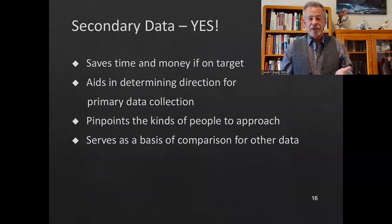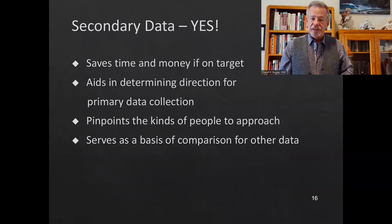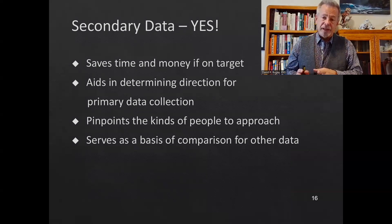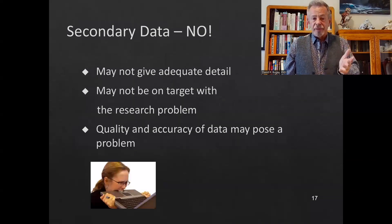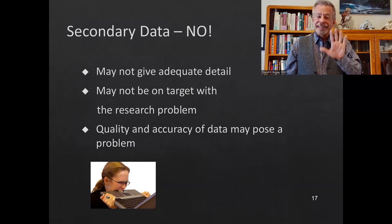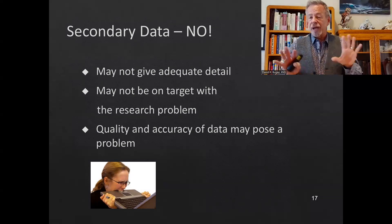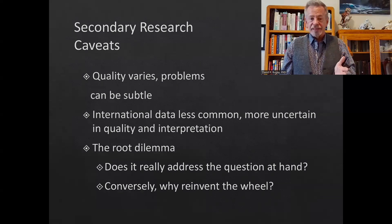With secondary data, the positives are that it saves time and money, aids in determining the direction of your primary research, helps pinpoint the kind of people to approach, and serves as a basis for comparison. Some problems: you may not have adequate detail, it may not be on target with your specific research problem, and since it's designed for a general population rather than your specific group, you may get off target.